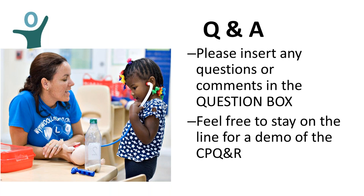We can talk about how you would organize yourself and what questions you would think about while using the CPQ&R. You need to have a compelling set of questions, and then get the right people around the table. It's most successful when you have state agency heads that control funding, key stakeholders, or private funders around the table to make decisions. Then there is a core group going out and getting the data, producing preliminary cost projections that go back to a steering committee to make decisions.